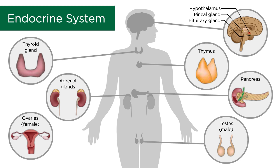This system employs the use of hormones, which are chemicals secreted from glands and enter the bloodstream where they circulate until exerting an effect on a downstream target cell.